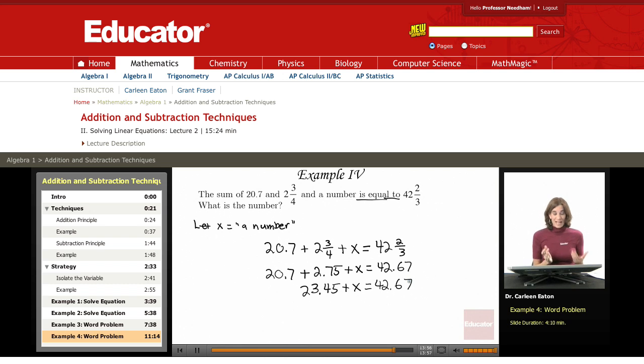Now I'm finally ready to start isolating the variable. Same as always, do the opposite operation. I have 23.45, so in order to isolate x, I need to subtract that amount, 23.45, from both sides.